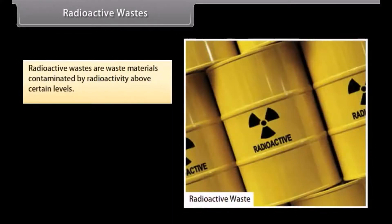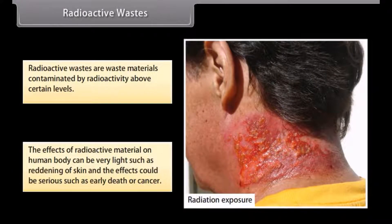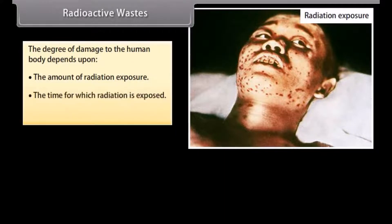Radioactive wastes are waste materials contaminated by radioactivity above certain levels. The effects of radioactive material on the human body can range from mild, such as reddening of skin, to serious, such as early death or cancer. The degree of damage depends upon the amount of radiation exposure, the time for which radiation is exposed, and the type of radiation.